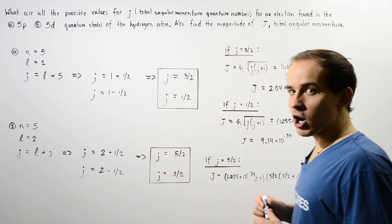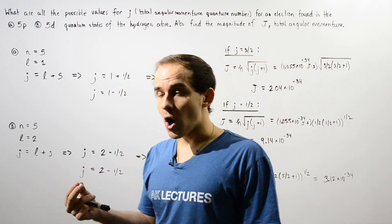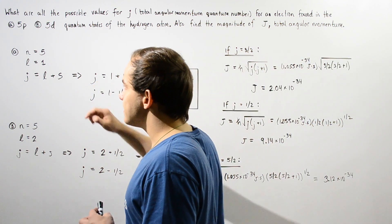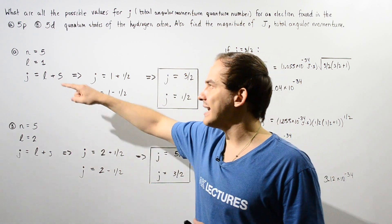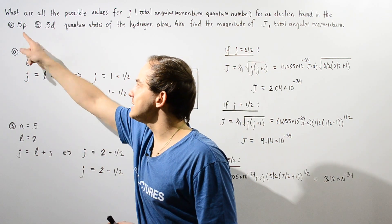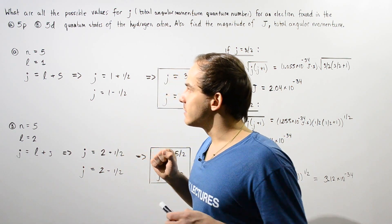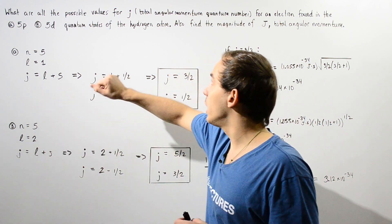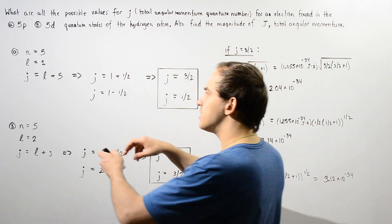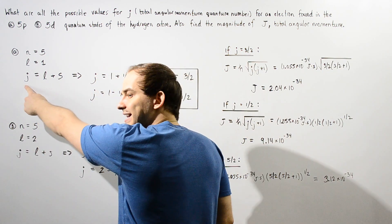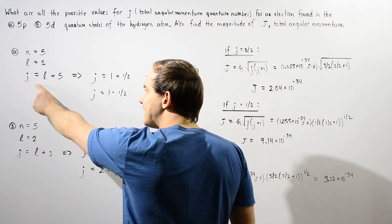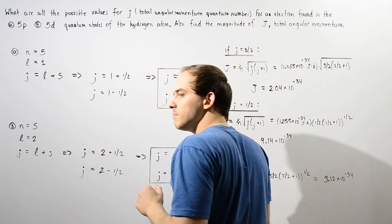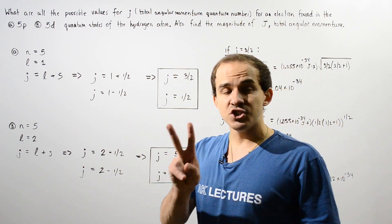Let's begin with part A. In part A, we have a single electron in the 5P quantum state of the hydrogen atom. The 5P simply means that the principal quantum number N is equal to 5 and the orbital quantum number L is equal to 1. Knowing what L is, we can calculate what J is — we can determine the total angular momentum quantum number using this relationship. The total angular momentum quantum number lowercase j is equal to the sum of L, the orbital quantum number, and the spin quantum number.